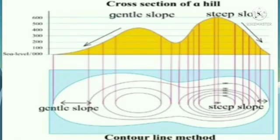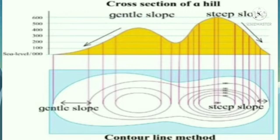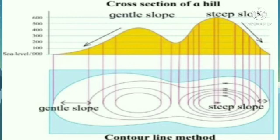First, we will study the contour line method. This method is used to show the unevenness of landforms on a map. The height of the land is measured from sea level, and points of the same height are identified. Their positions are marked accurately on a map, and these locations are joined with a line. Lines joining locations of the same height on a map are called contour lines. When the distance between contour lines is less, the slope of the land is steep; when the distance is greater, the slope is gentle.